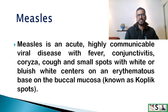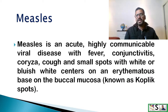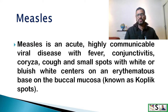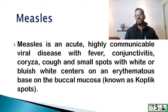What is measles? Measles is an acute, highly communicable viral disease which is identified by fever, conjunctivitis, coryza, cough, and small spots with white or bluish-white centers on an erythematous base on the buccal mucosa, which are known as Koplik's spots.